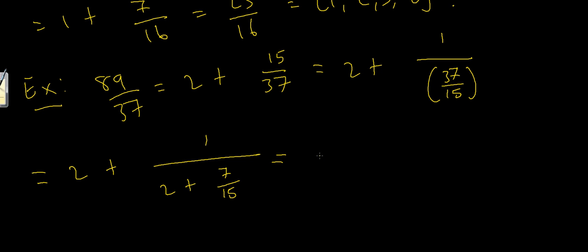I can write 7 over 15 as 1 over 15 over 7. So let's do that. That's 2 plus 1 over 2 plus 1 over 15 over 7. So you've already got this sort of nested fraction thing going on, even after just 2 or so terms.